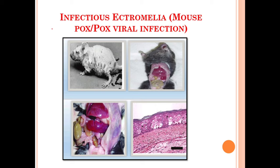This is the pictorial depiction of infectious ectromelia, also called mouse pox and pox viral infection. Mice infected with infectious ectromelia show alopecia and hair loss. You can also observe limb amputation in the surviving mice. This is the microscopic slide of the skin, where you can see the epithelium layer showing ballooning of the epithelial cells and infiltration of the inclusion bodies.